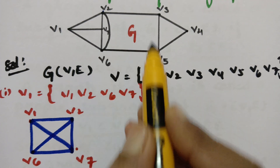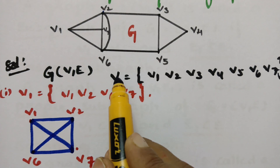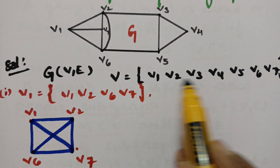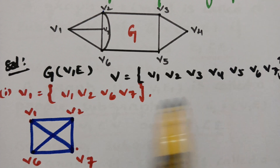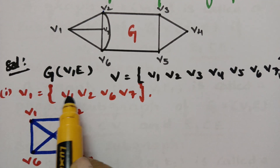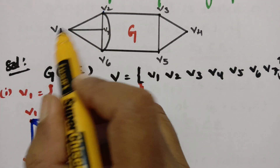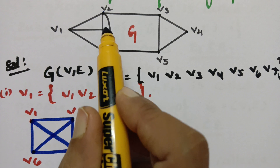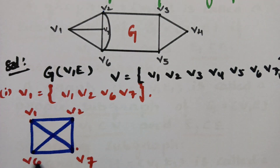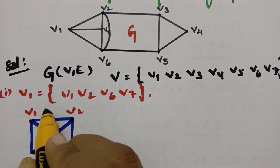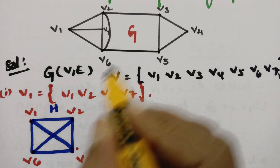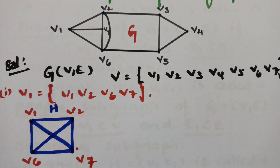So this is the main graph with 7 vertices. Out of those 7, I considered only 4 — V1, V2, V6, and V7 — and formed this graph, which is nothing but the subgraph of the main graph. This is the first example.